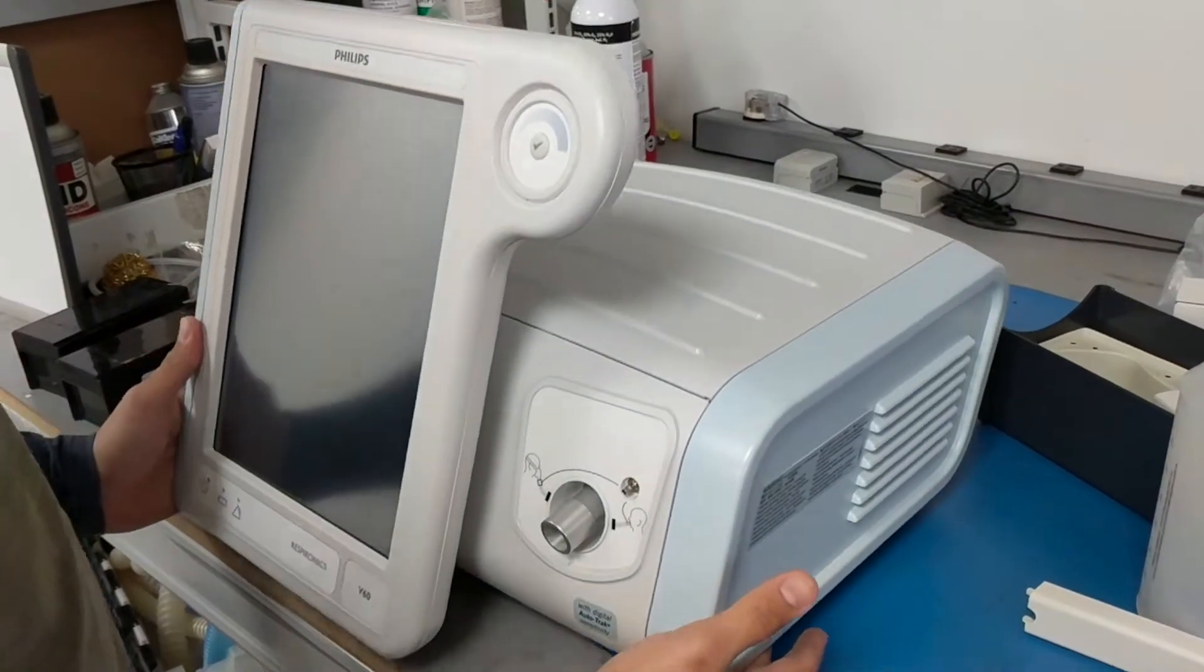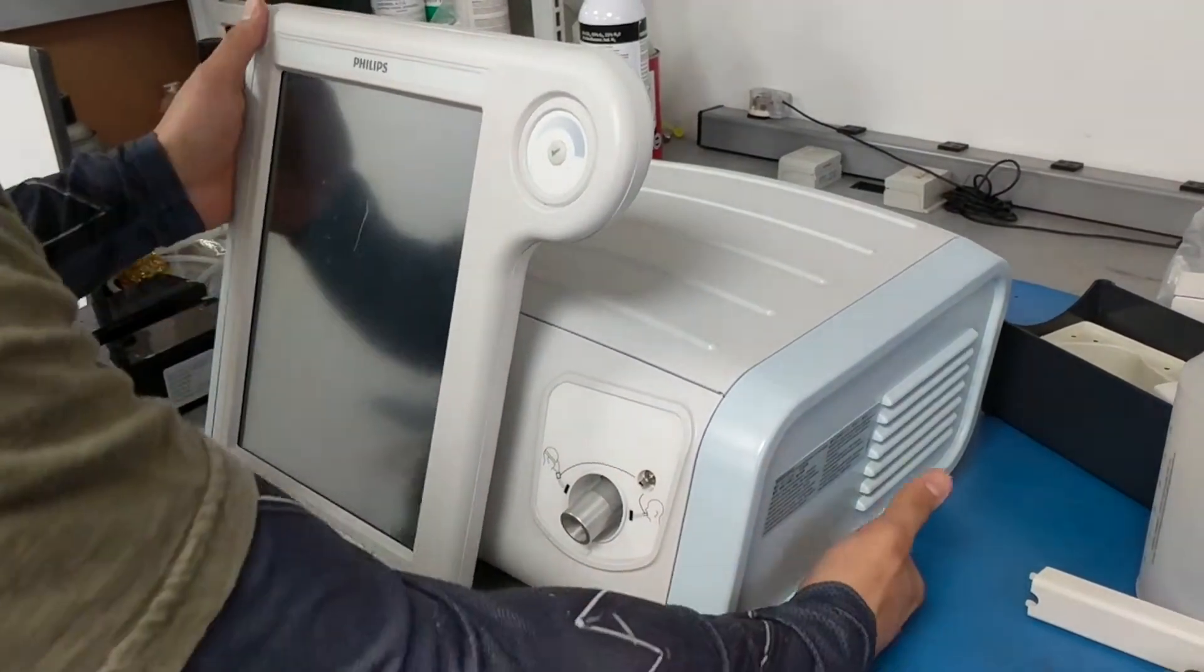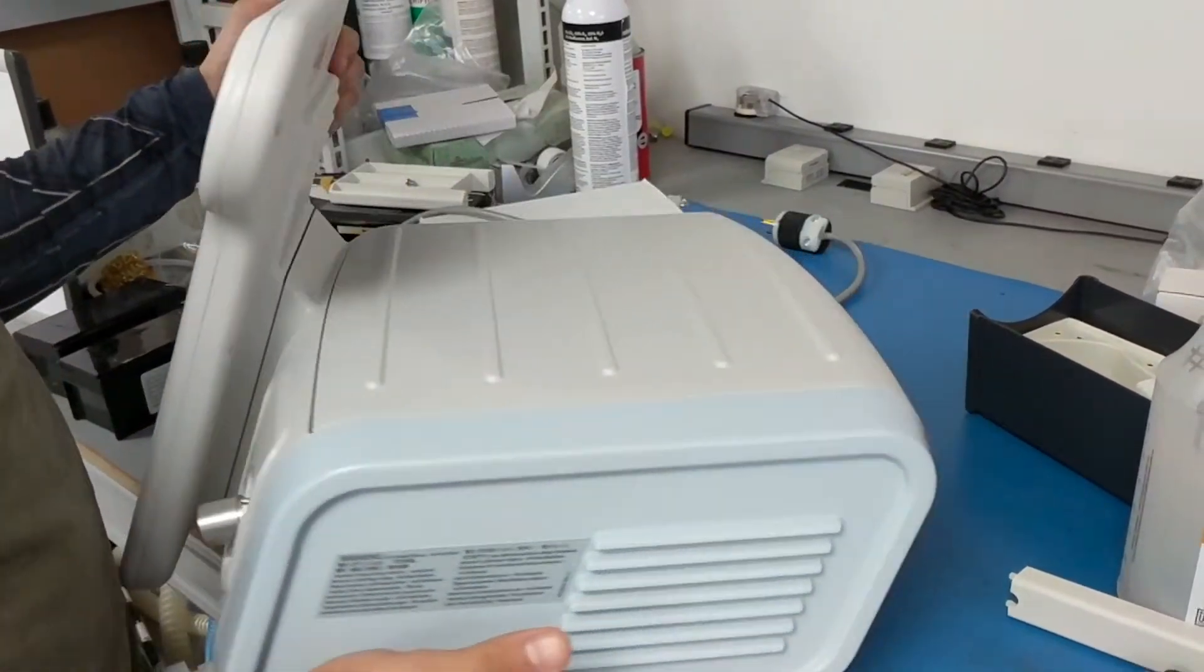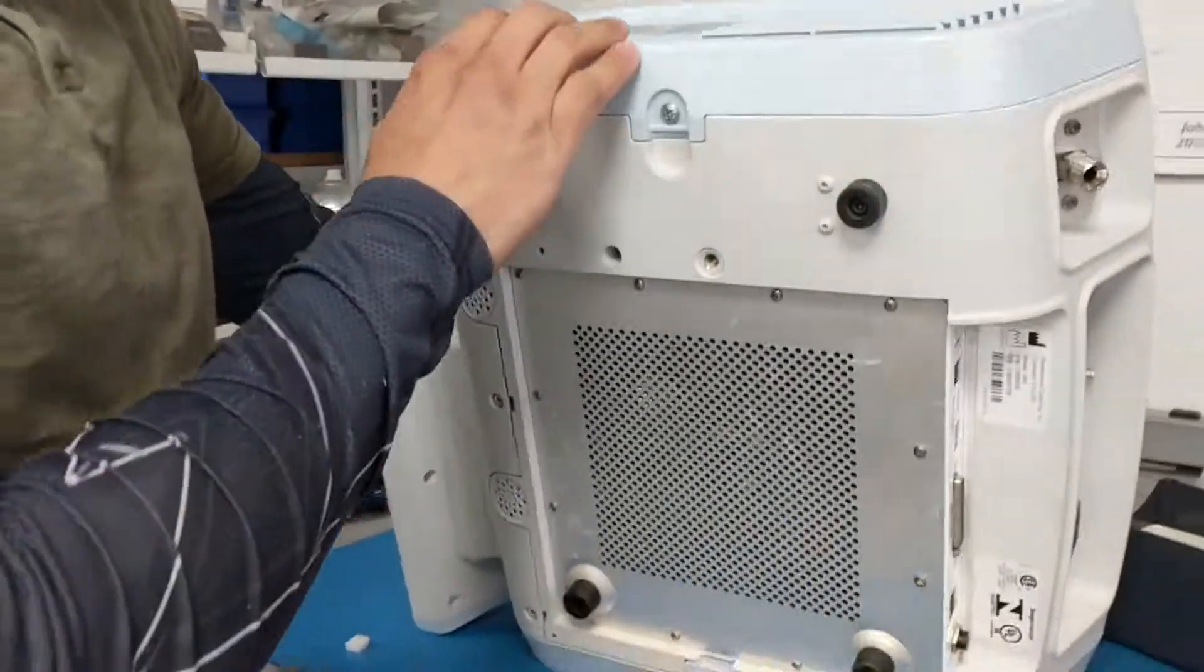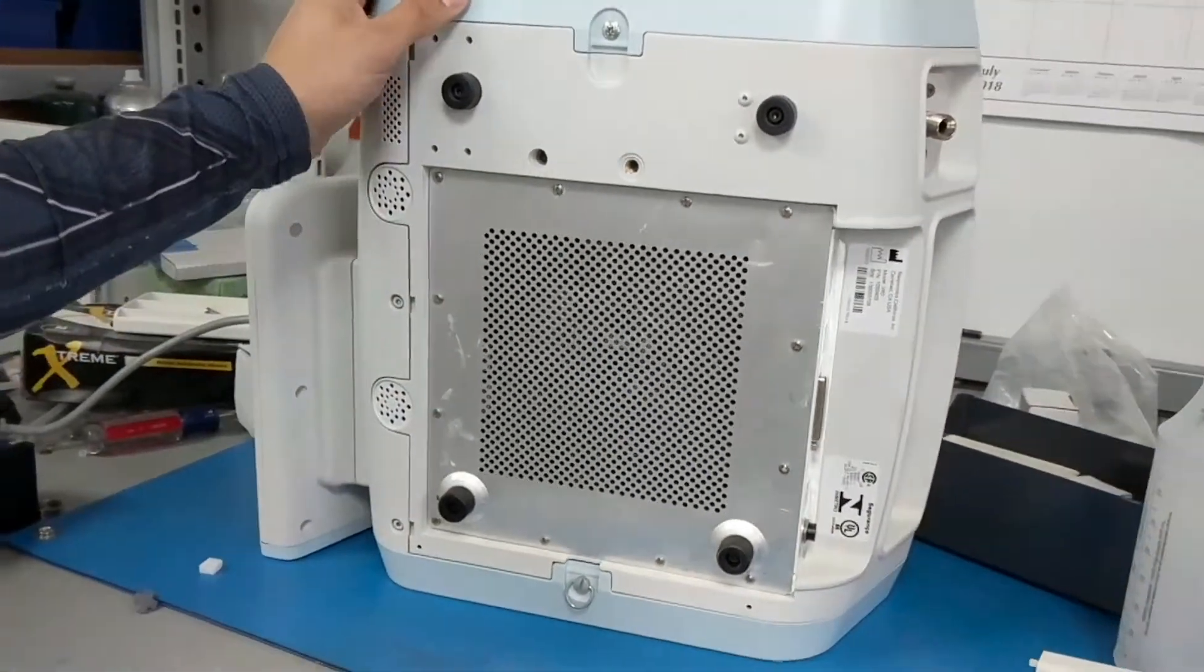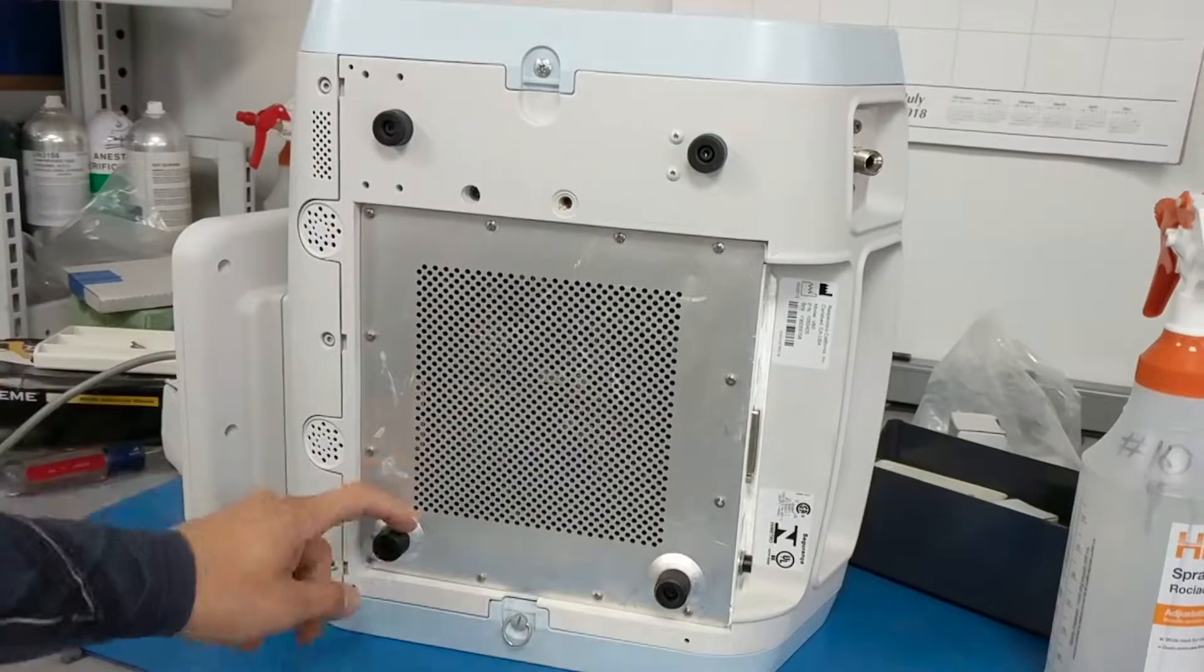As you can see, we have our unit here, Philips V60 facing us. If you turn it and you look underneath, you'll see four feet. This is how the unit will arrive with four feet.